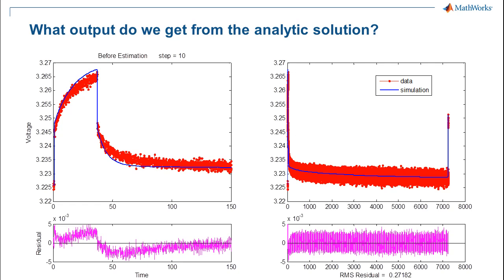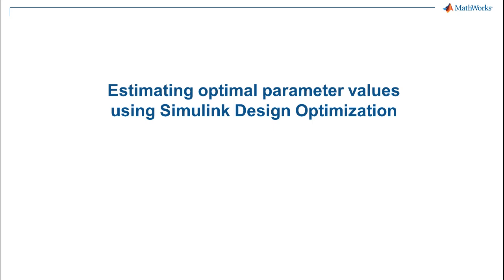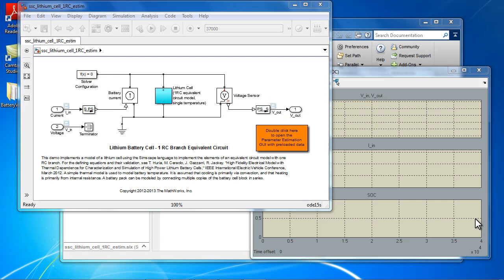I will now hand it back to Robin to give a demonstration of Simulink Design Optimization, which we used to finish the estimation. Our next step is to find the best overall fit for the parameters and try to remove those residual trends from the plot. We used Simulink Design Optimization to accomplish that. Let's look at a simple demo and then we'll come back and talk about how we automated the complete estimation process for the 3RC model.